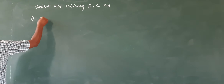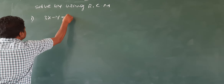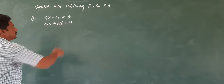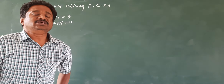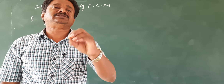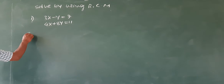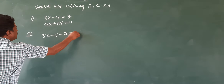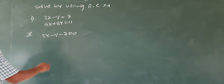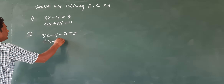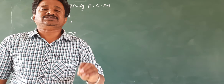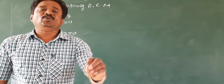First problem: 3x minus y is equal to 7, and 4x plus 8y is equal to 11. Let us solve these two linear equations by using rule of cross multiplication, RCM. We rewrite them as: 3x minus y minus 7 equals 0, and 4x plus 8y minus 11 equals 0.